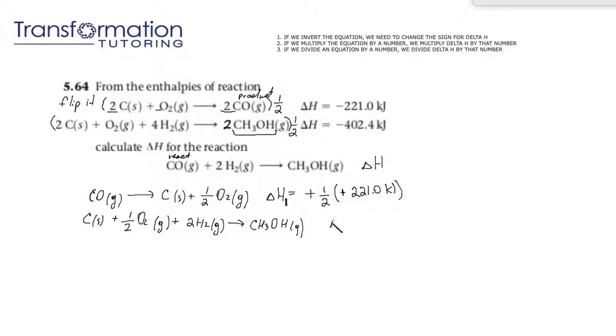So we will get C solid plus one half O2 gas plus two H2 gas goes to CH3OH gas. Again our delta H, let's call it delta H2. We keep the sign because we did not invert the reaction but we did multiply the equation by one half so we're going to multiply our delta H by one half as well.